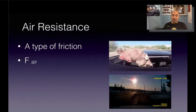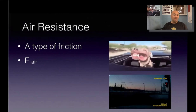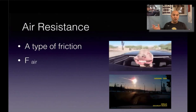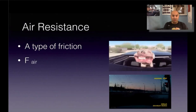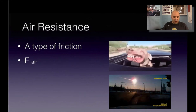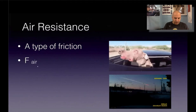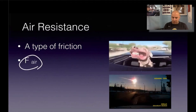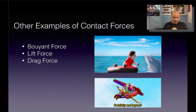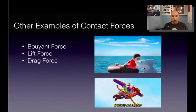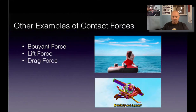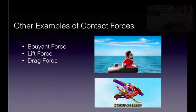Next we've got air resistance. Air resistance is a type of friction — it's when air is pushing up against something as it moves. I use F sub air for the units there. You can also have things like buoyant force, lift force, and drag force — we'll talk more about those later on.